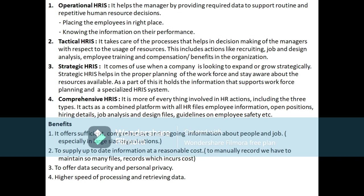Information is stored regarding what opening positions exist in the organization, hiring details, job analysis — that is, job description — and the designing of the job. Guidelines regarding employee safety and security taken by the top management are also stored. All details, all elements, and all subsystems will be seen in comprehensive HRIS. The meaning of comprehensive is that all elements are taken — not only one subsystem — and all element data will be stored.